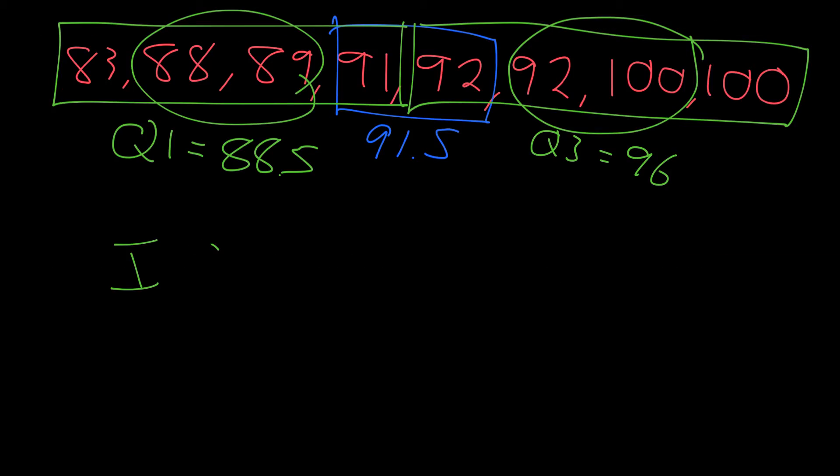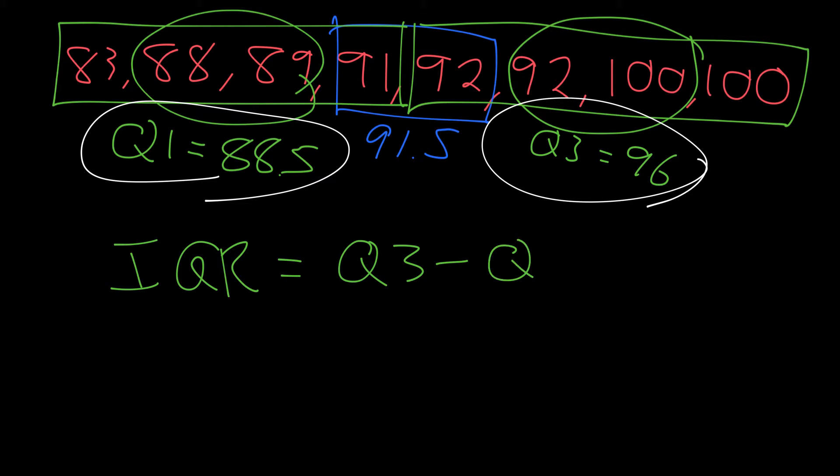So to find the interquartile range, you take quartile three and subtract quartile one. So it's Q3 minus Q1, which would be 96 minus 88.5, which equals 7.5.